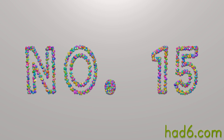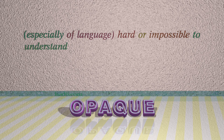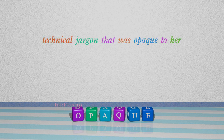Number 15: Opaque, which means especially of language, hard or impossible to understand. For example: Technical jargon that was opaque to her.